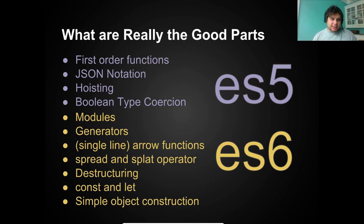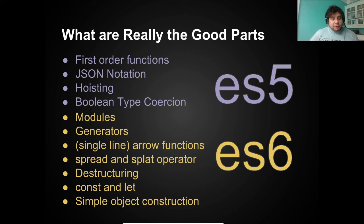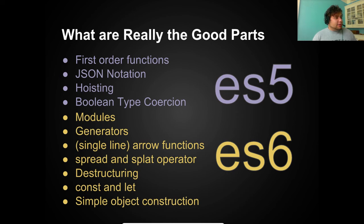Before we begin, I want to explicitly mention the features of JavaScript that make it a really nice language to work with. First, first-class functions — functions for everything. You can pass a function as a parameter, assign it to a variable, or declare it, and there's very little difference. Then we have JSON notation — it's easy to create objects, similar to tuples in stricter functional languages. Hoisting is really misunderstood but becomes a neat feature to keep your code nicely organized. Boolean type coercion saves some typing and instinctively makes sense.